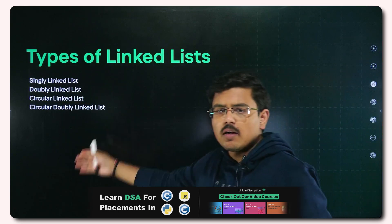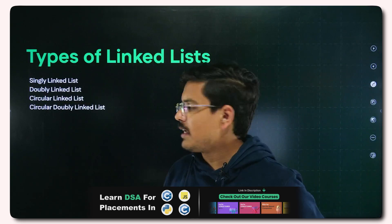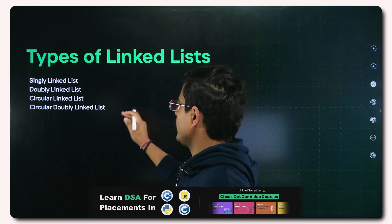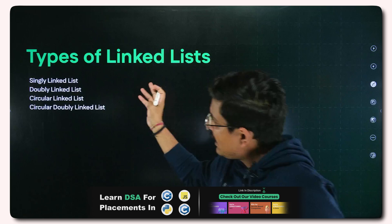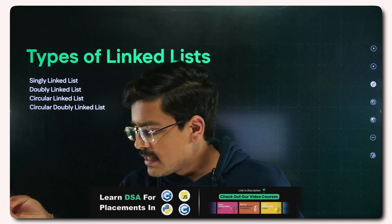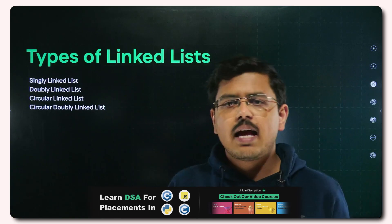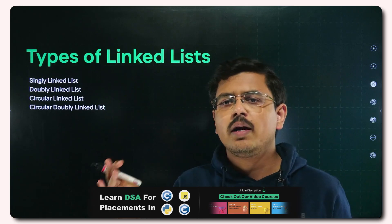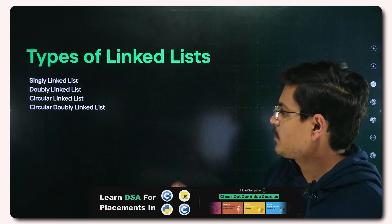These are the types of linked list that we'll cover today: singly linked list, doubly linked list, circular linked list, and circular doubly linked list.